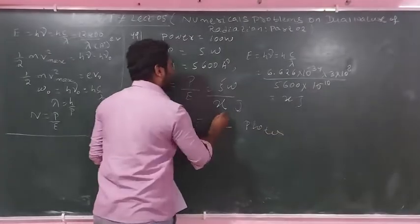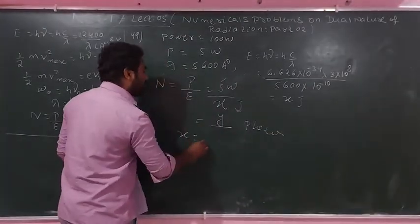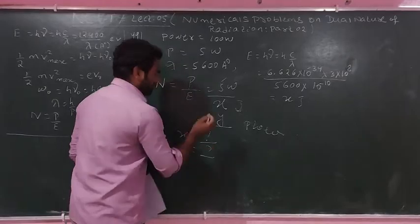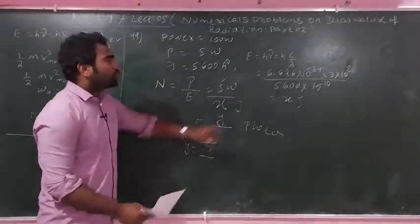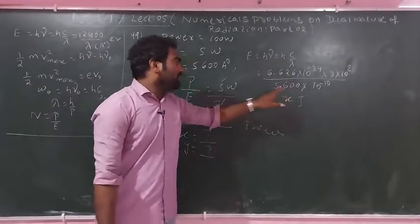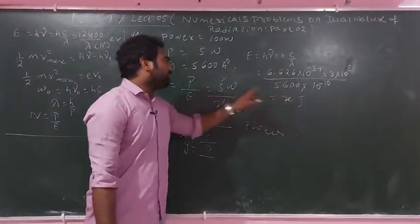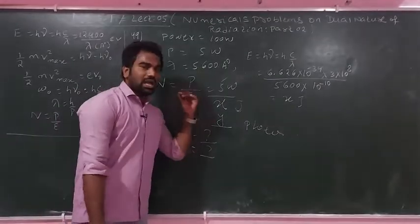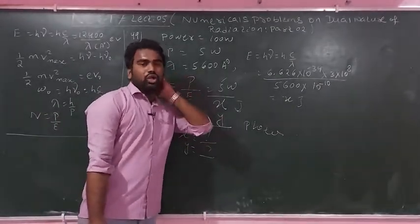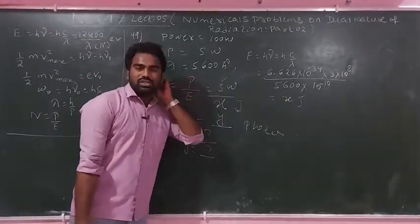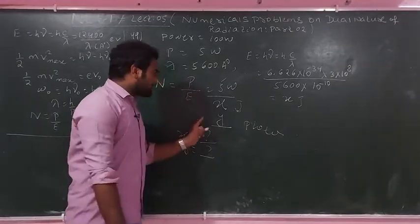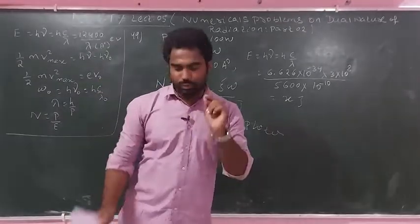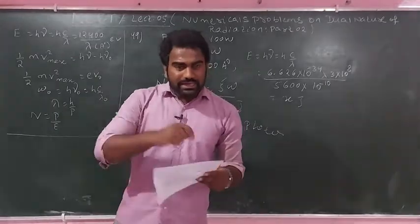Calculate the energy of one photon. Divide power (5 watt) by that energy to get the number of photons emitted per second. That gives the answer for question number 49. Next question.